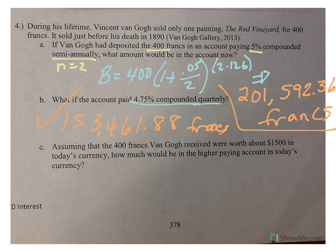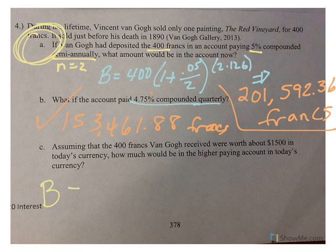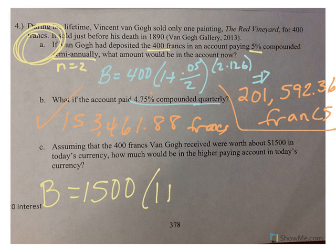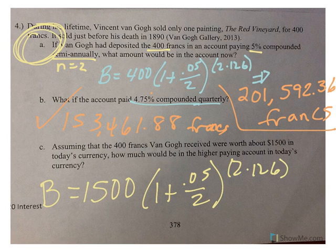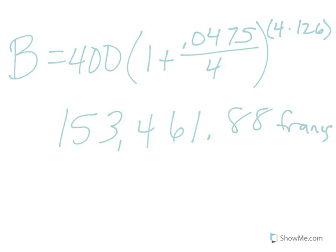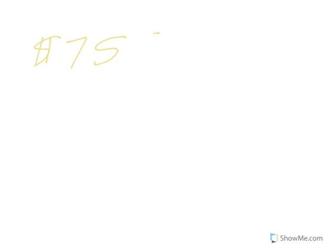Okay, now, in part C, it says, assuming that the 400 francs that Van Gogh received were worth about $1,500 in today's currency, how much would be in the higher-paying account? Well, the higher-paying account was account A. So, we're saying, if we used $1,500, 1 plus .05 divided by 2, 2 times 126, right, higher-paying. So, the only thing that's changing is that we're using dollars instead of francs. We end up with an amount of $755,971.35.